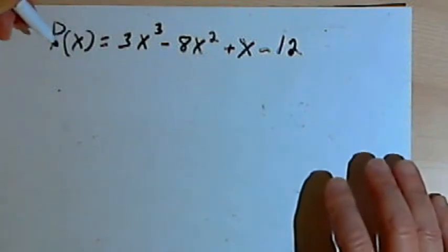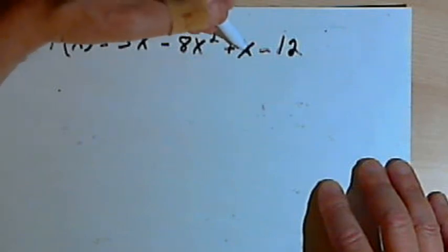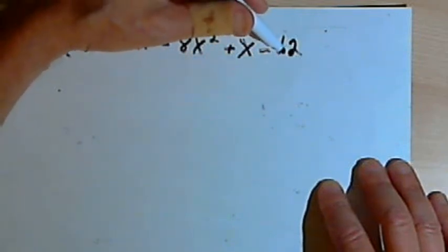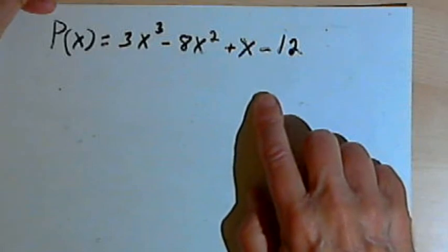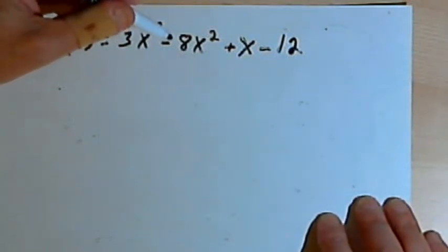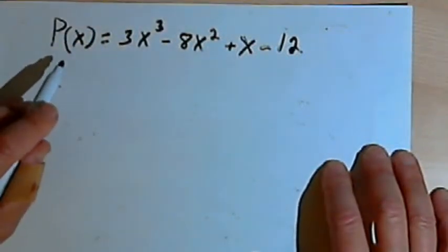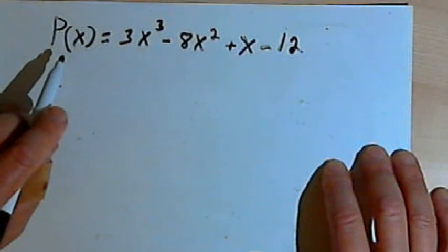I've got this polynomial function P(x) = 3x³ - 8x² + x - 12. Let's say I want to find out whether there are any rational roots or rational solutions to this function. I can do this using the Rational Roots Theorem. The theorem goes like this.